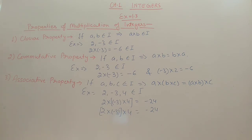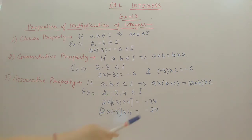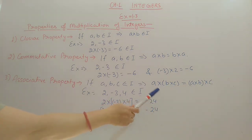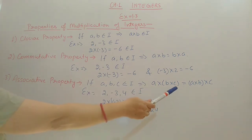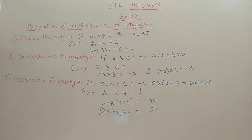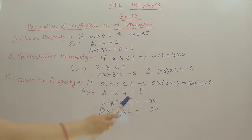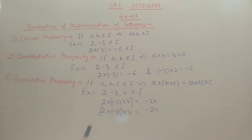The third property is the associative property. In this property, we have 3 integers and we change the order of multiplication — first multiplying the last two and then with the first, or first multiplying the first two and then with the third. The answer remains equal. For example, with 2, minus 3, and 4: minus 3 into 4 is minus 12, and minus 12 into 2 is minus 24. Changing order: 2 into minus 3 is minus 6, and minus 6 into 4 is minus 24. Both ways, the answer is the same.